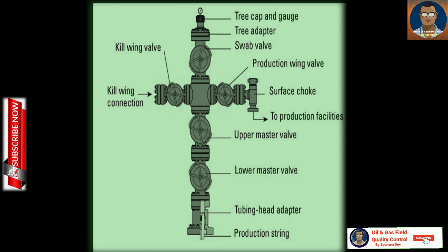To revise: the christmas tree consists of five valves — kill wing valve to kill the pressure, swab valve, production wing valve, upper master valve and lower master valve. Upper and lower master valves are double protection isolation valves. The production wing valve controls the flow of oil and gas, allowing operators to start or stop production. The swab valve allows well intervention, maintenance or logging without needing to kill the well.